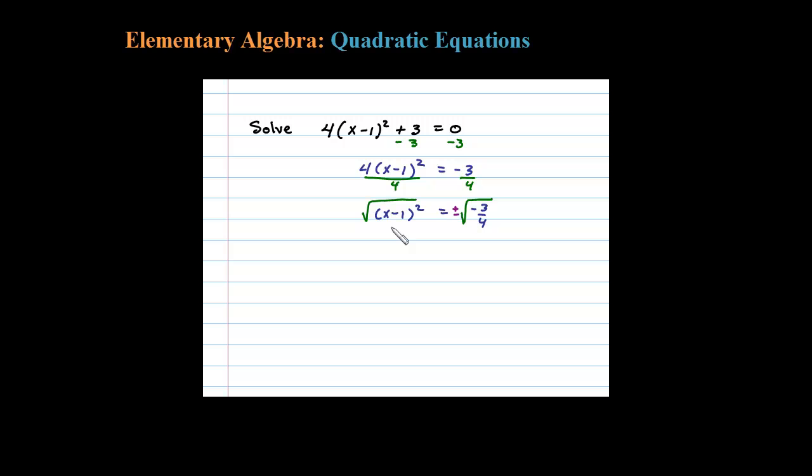Square root of X minus 1 squared is X minus 1, equals plus or minus. Now the square root of negative 3 is i times the square root of 3.